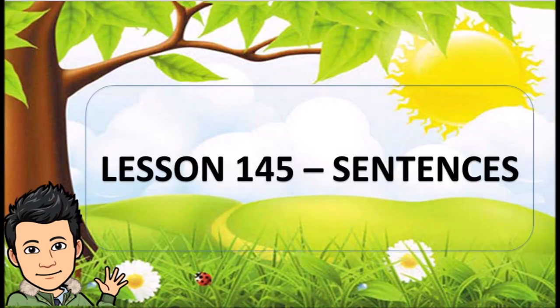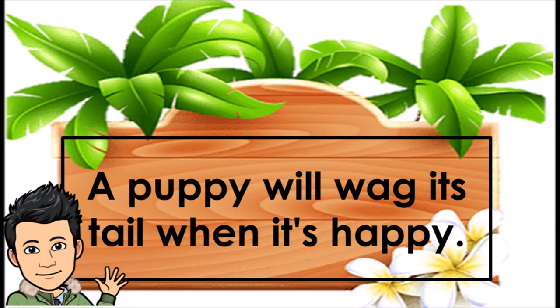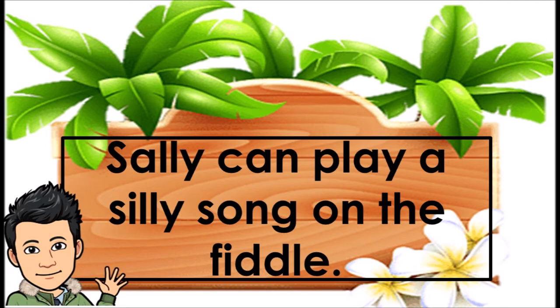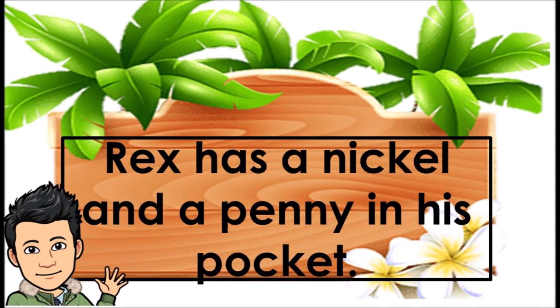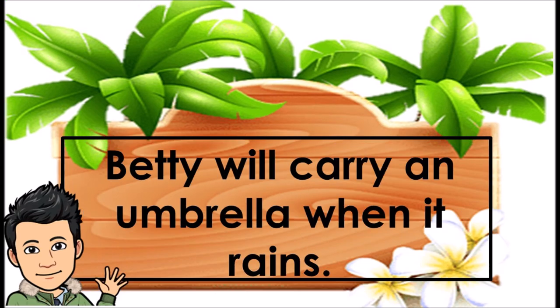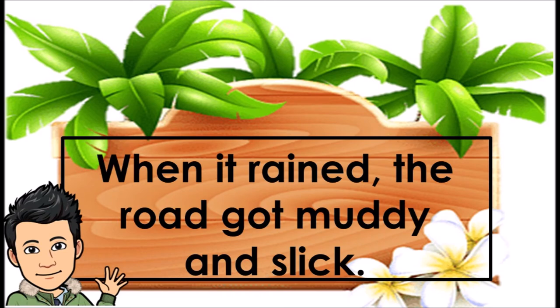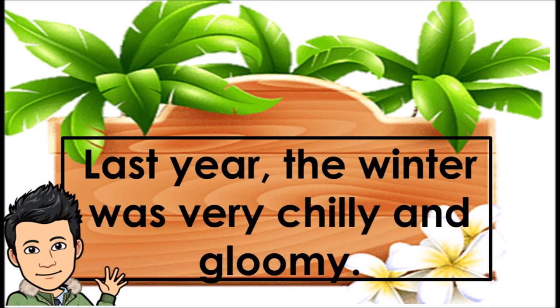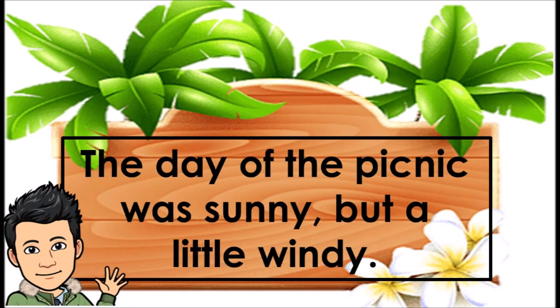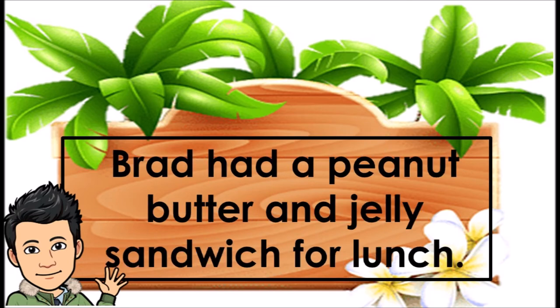Lesson 145, Sentences. A puppy will wag its tail when it's happy. Sally can play a silly song on the fiddle. Rex has a nickel and a penny in his pocket. Betty will carry an umbrella when it rains. When it rained, the road got muddy and slick. Last year, the winter was very chilly and gloomy. The day of the picnic was sunny, but a little windy. Brad had a peanut butter and jelly sandwich for lunch.